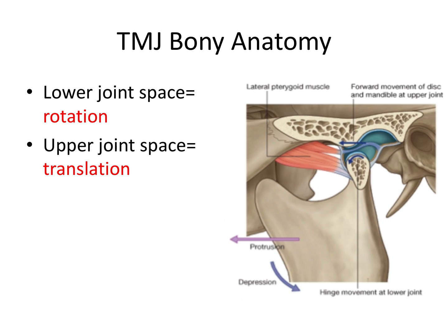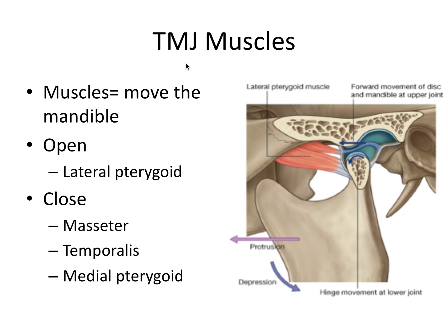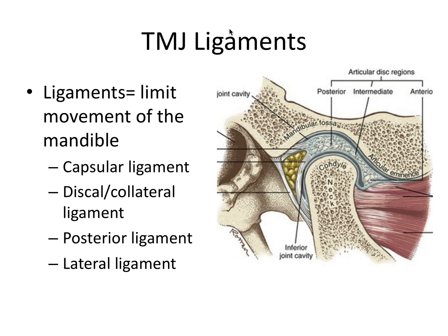Next, let's talk about the muscles of mastication — there are four, responsible for moving the mandible. Generally, the lateral pterygoid is involved with opening of the mandible, whereas the masseter, temporalis, and medial pterygoids are involved with closing the mandible. There are also ligaments involved with the TMJ; on the flip side of the muscles, ligaments limit the movement of the mandible and keep the muscles in check.